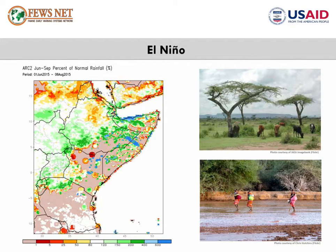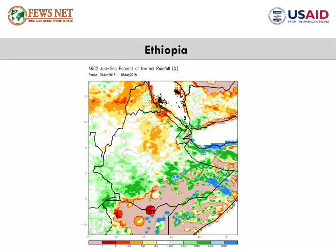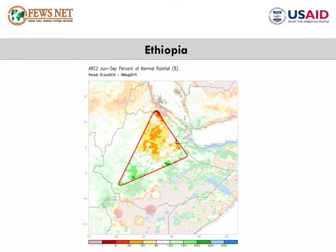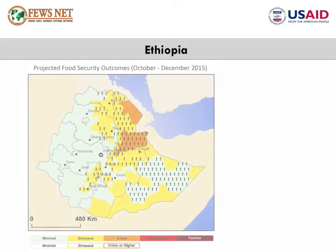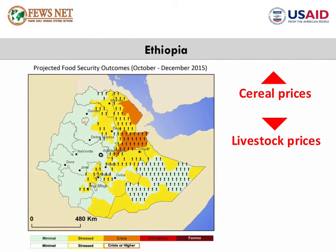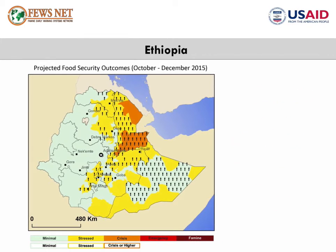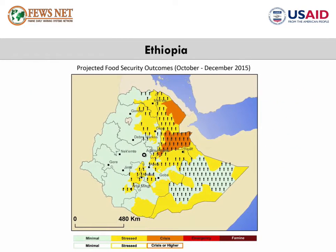In Ethiopia, below-average rainfall delayed planting and extended the lean season in parts of Tigray, Amhara, Oromia, and SNNPR regions. In southern Afar and Sitti Zone in Somali region, extreme dryness is causing an unusually high number of livestock deaths and decimating normal food and income sources. In many areas, high cereal prices, low livestock prices, and limited income are making it difficult for poor households to purchase enough food. Acute malnutrition is rising.